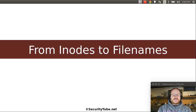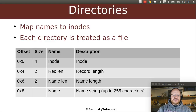Recall that the inode has all of the metadata. So what connects that metadata to a file name? Well, it's a directory entry. So what do these look like? If we look at the generic directory entry, it is something that maps names to the inodes, and each directory is treated as a file — which if you know anything about Linux should not be surprising, because in Linux everything's a file.